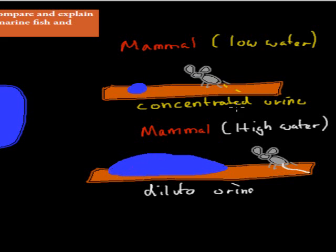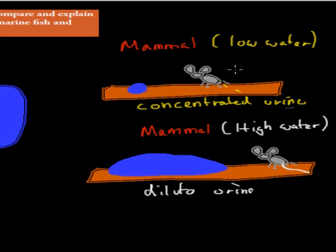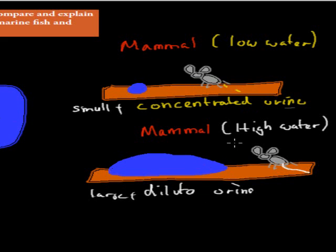We also need to look at the mammals. There can be two scenarios — I've drawn a random mouse in a desert environment. A mammal with access to very little water is going to produce concentrated urine, whereas a mammal close to a large pond of water will produce dilute urine. The first mouse, which has low water, can't drink too much, so it produces small amounts of concentrated urine to conserve water. The one with lots of access to water will drink a lot and produce large amounts of dilute urine to get rid of all that water.